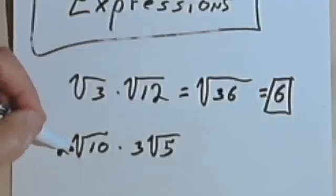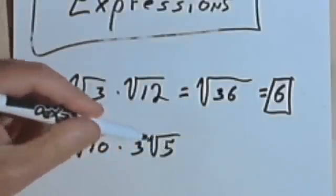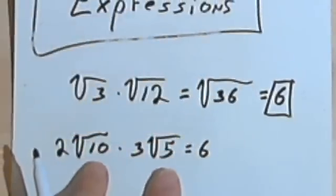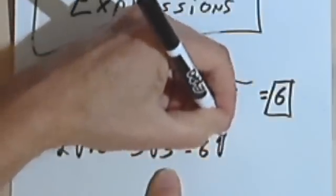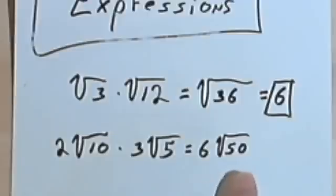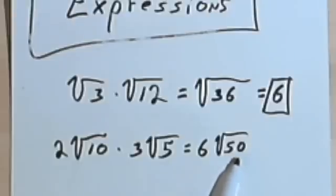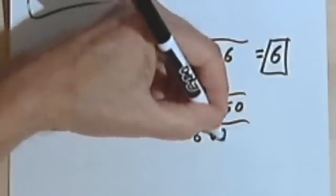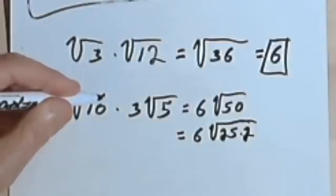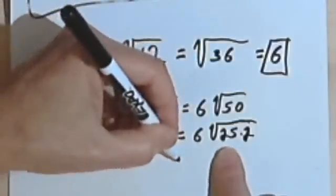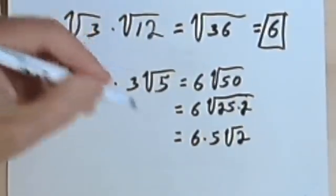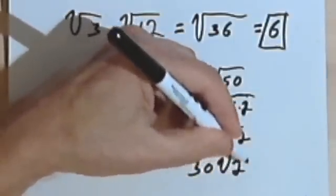Here's another problem. I've got 2 times the square root of 10 times 3 times the square root of 5. I start out by multiplying the 2 times the 3 — that's going to give me a 6. Then I multiply the two radicands, so 10 times 5 is 50. Now 50 is 25 times 2, so I can break this down into two factors where one is a perfect square. I'll have 6 times the square root of 25 times 2. Since the square root of 25 is 5, I'm going to have 6 times 5 times the square root of 2, and 6 times 5 is 30. So I'll have 30 times the square root of 2.